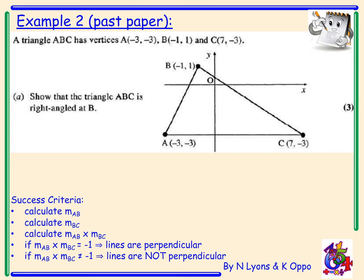Step one. Let's first of all calculate the gradient of the line AB. Step two, calculate the gradient of the line BC. Multiply them together. So calculate MAB times MBC. Now if it equals minus one, this means the lines are perpendicular, i.e. that is a right angle triangle. If it doesn't equal minus one, then the lines are not perpendicular and it's not a right angle triangle.